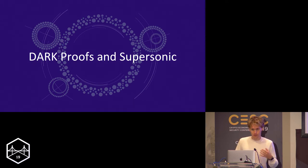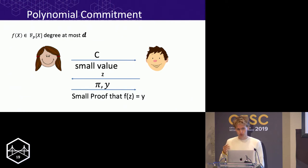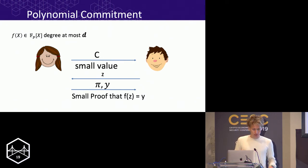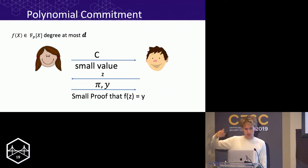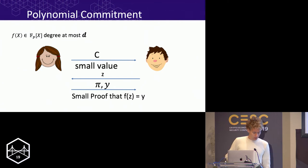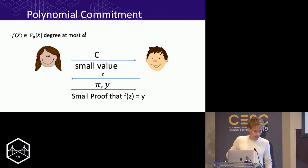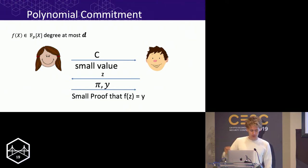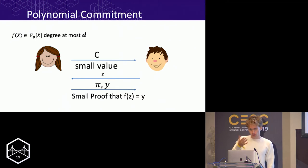I want to give you an understanding of how this tool works. We're going to use a polynomial commitment. A polynomial commitment is a cryptographic commitment — a small value C — so even if I commit to a huge polynomial like 3 + x + 5x² − 7x³ over a finite field, I can commit to it in a constant-size value, maybe a couple hundred bytes. Then the verifier can challenge at a point z, and I can give you the evaluation f(z) = y and a proof that the evaluation was done correctly.